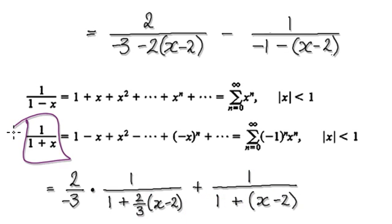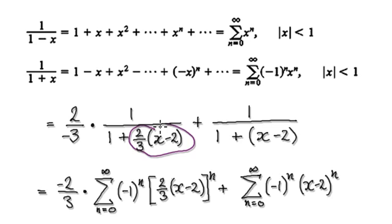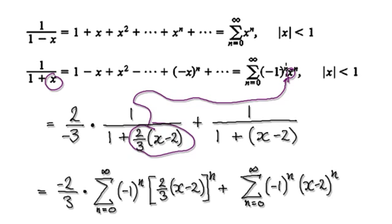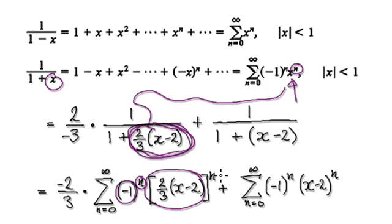So now we can make use of this. This will then become — so don't forget, this whole thing here is your x here. So you've got to put this into here, into this x here. So it would be minus 1 to the power of n, and then you've got your x to the power of n. So you've got your bubble here, your x is this whole thing here, and then to the power of n.